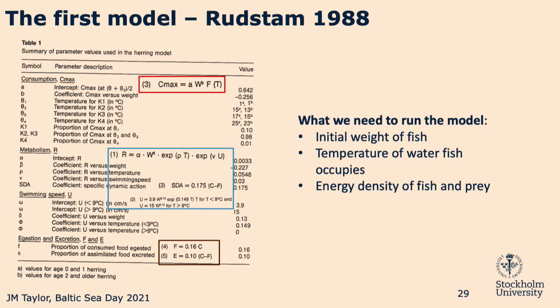The consumption equation is in red, respiration equations in blue, and the waste equations — excretion and ingestion — in brown. What data do we need to run these models? Looking at the equations, a lot of them are functions of weight W and temperature. Respiration is weight, temperature, and U, which is swimming speed — also dependent on weight and temperature. So we need an initial weight for the fish, the temperature of the water the fish occupies, and the energy density of the fish and prey, since these models are done in terms of joules.